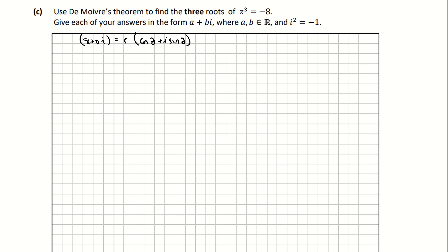First I need to find the modulus r, which is the square root of a squared plus b squared. That's the square root of minus 8 squared plus 0 squared. Minus 8 squared is 64 and the square root of 64 is 8, so r equals 8.